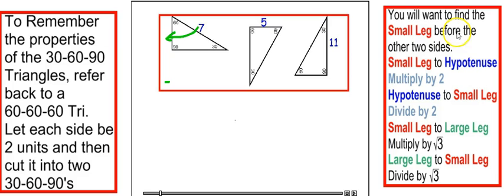Notice over here, we always want the small leg as quick as possible. Well, to go from the hypotenuse to the smallest leg, we divide by 2.